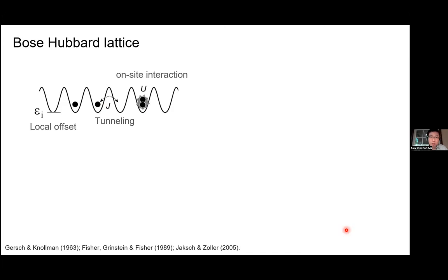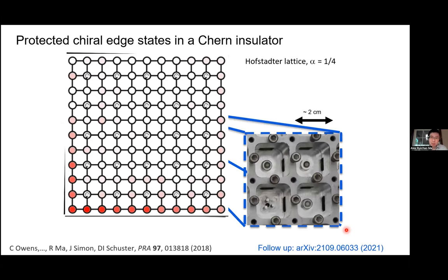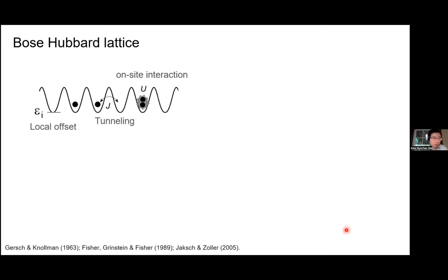I'd really like to now talk about the Bose-Hubbard lattice and how we can build it in circuits. I'll use this as an example to show you most of the other bath engineering ideas. In the case of the topological lattice, the data I'm showing is mostly pure wave mechanics — a microwave photon traveling in a linear array of cavities. There's nothing particularly quantum about it. In this follow-up work, we added superconducting qubits in order to mediate strong photon-photon interactions.